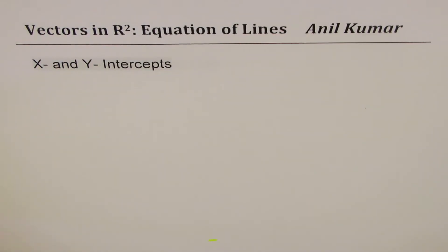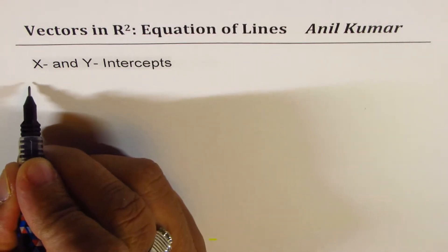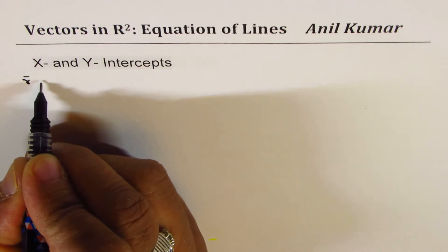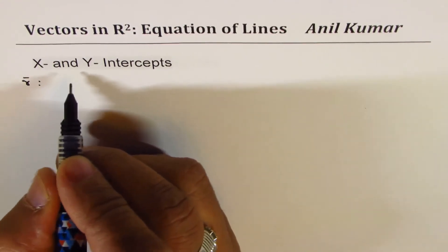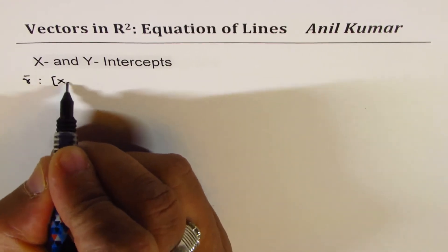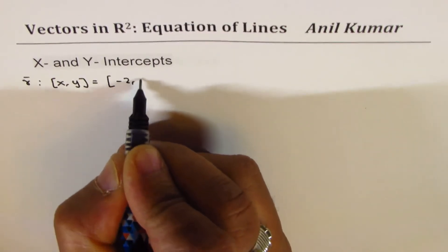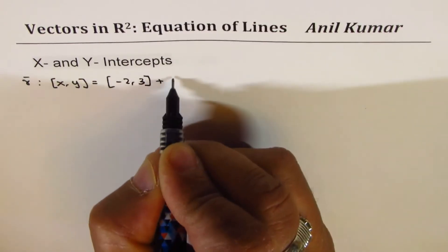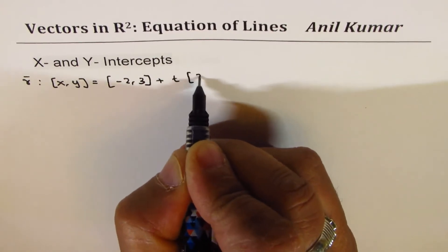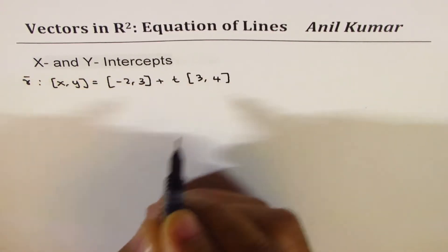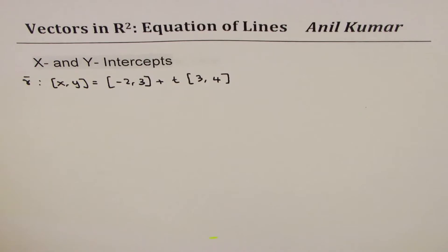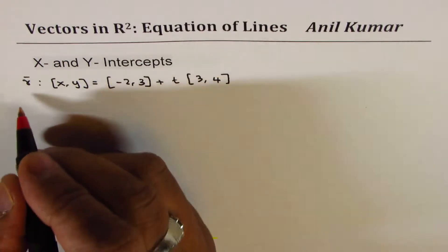Now let us see how to find x and y intercepts for a given line. Let's take a few examples. Let's say the line R is given to us as, starting with point (-2, 3) plus t times (3, 4). That's the equation of a line. We want to find the x-intercept and y-intercept.